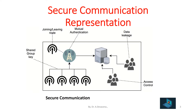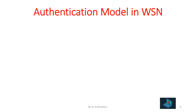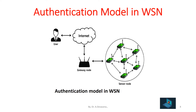Data leakage is also represented in this diagram. The authentication model in wireless sensor network is shown here. In this diagram, a user and sensor nodes are connected through the gateway node, and between the user and the gateway node, the internet is available. Through the internet, the user can connect to the sensor nodes. The purpose of using the gateway node is to provide proper authentication to connect the appropriate sensor nodes to the user.